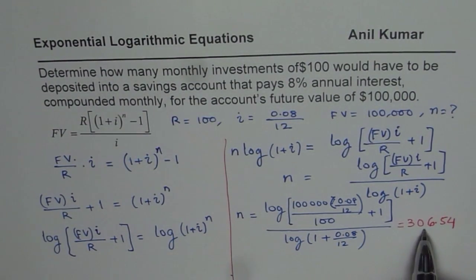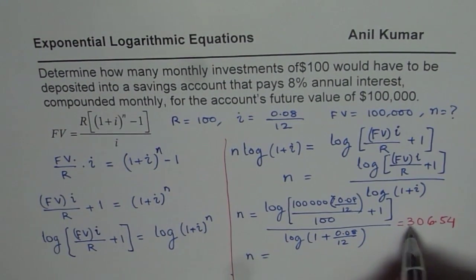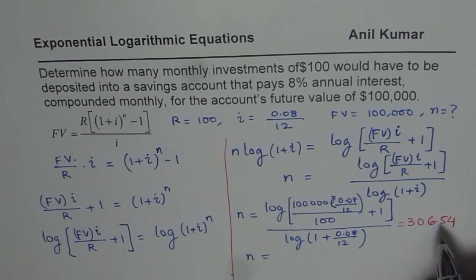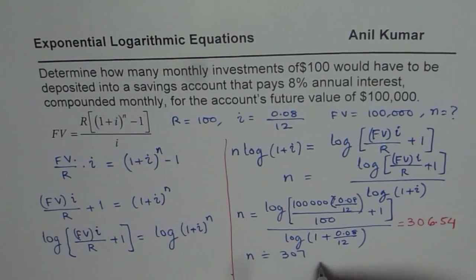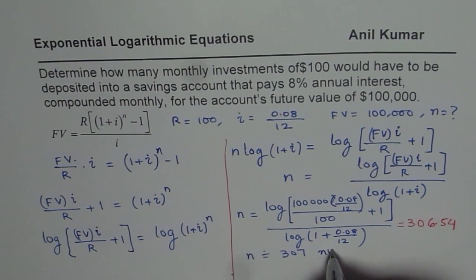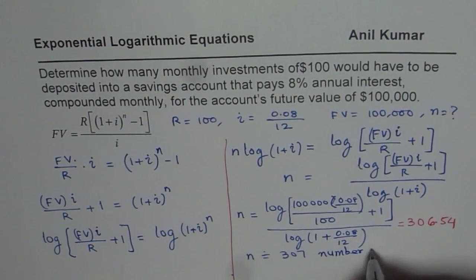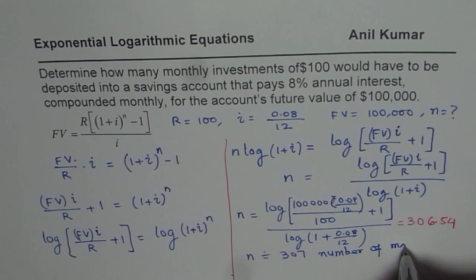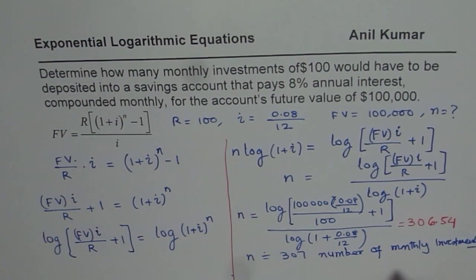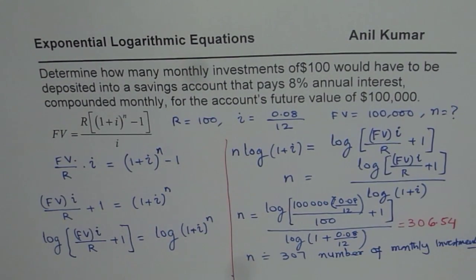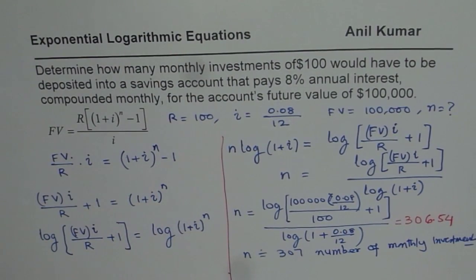You could do it in one step as I showed you. Now, that number has to be rounded. When you round it, you get a higher amount. So it is 307 monthly investments. You'll get slightly more than 100,000, but that is how you should be doing it.